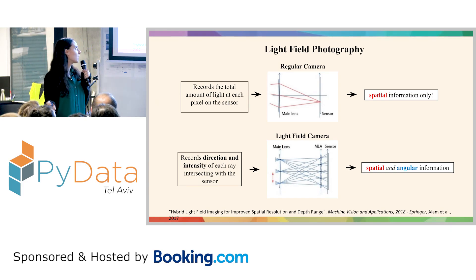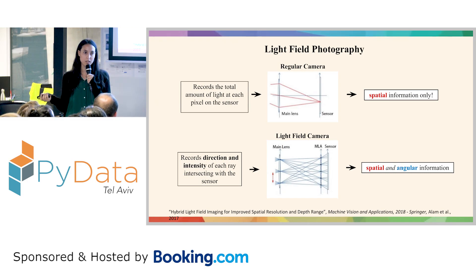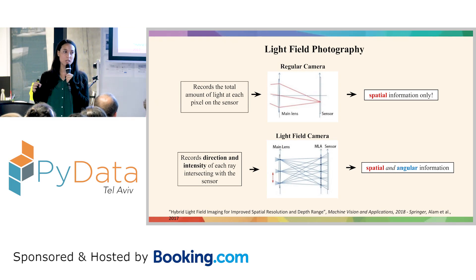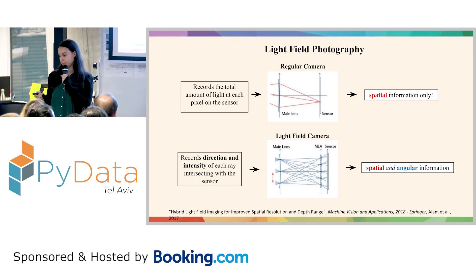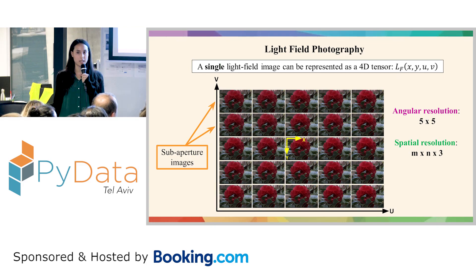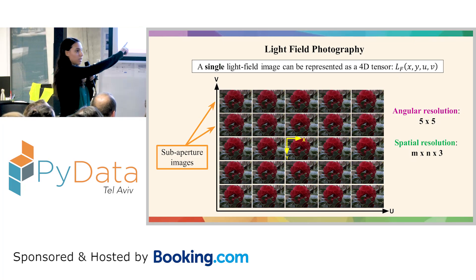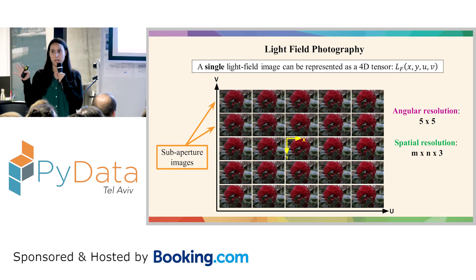Light field cameras record the direction and intensity of each light ray that intersects with the sensor, and therefore they get both spatial information and angular information of the same scene. A single light field image can be represented by a 4D tensor, and we can look at it as a series of RGB images arranged on a rectangular grid, each one taken from a slightly different angle.